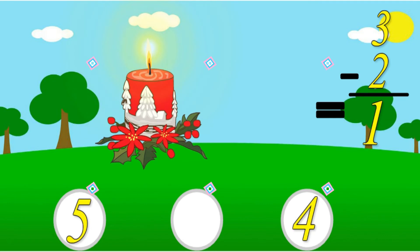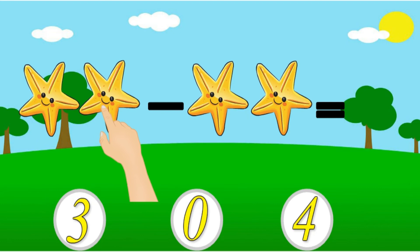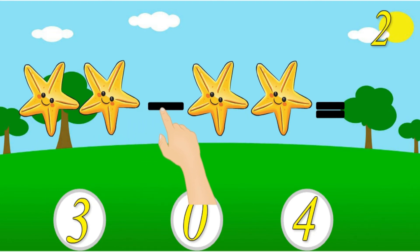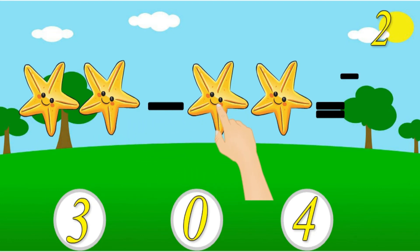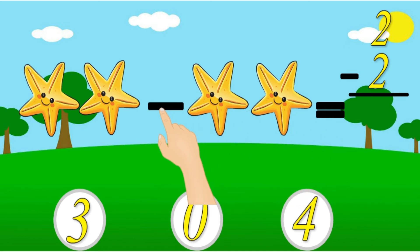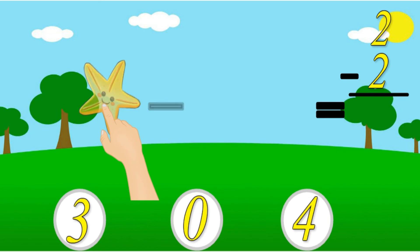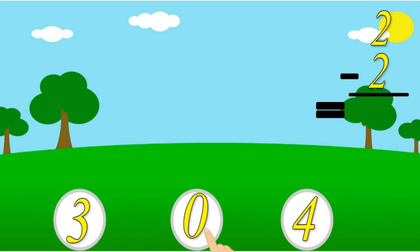1, 2 minus 1, minus 2, equal. Now let's solve: 2 stars minus 2 stars. There is nothing left. The right answer is 0.